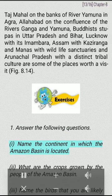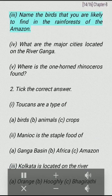Answer the following questions: (I) Name the continent in which the Amazon basin is located. (II) What are the crops grown by the people of the Amazon basin? (III) Name the birds that you are likely to find in the rainforests of the Amazon. (IV) What are the major cities located on the river Ganga? (V) Where is the one-horned rhinoceros found?